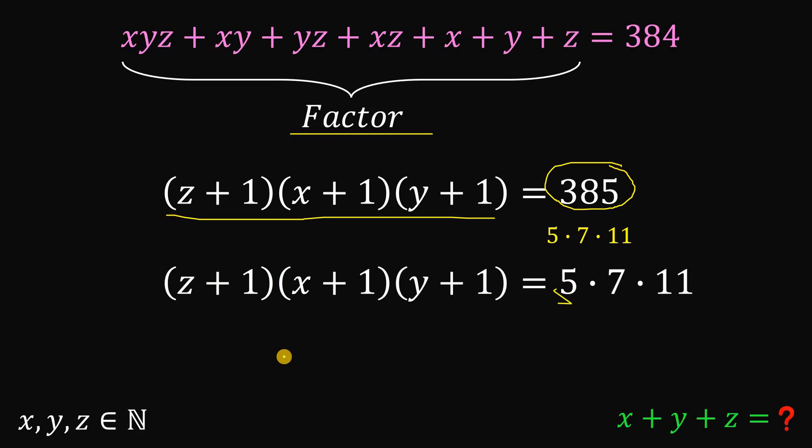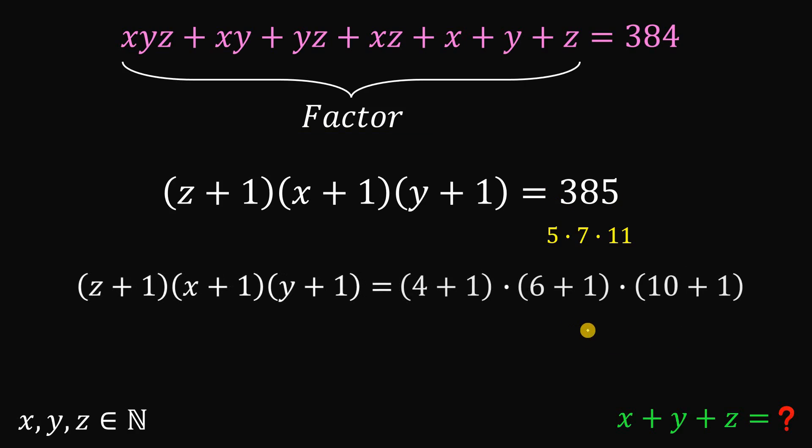And this is equivalent to z plus 1 times x plus 1 times y plus 1. And take note, since x, y, and z are all natural numbers, we can rewrite 5, 7, and 11 as 4 plus 1, 6 plus 1, and 10 plus 1, which tells us that z can be 4, x can be 6, y can be 10. And of course, we can use the permutation of 4, 6, 10 for the values of x, y, and z. But we don't care to the value of x, to the value of y, or to the value of z. We care to the sum of x, y, and z.